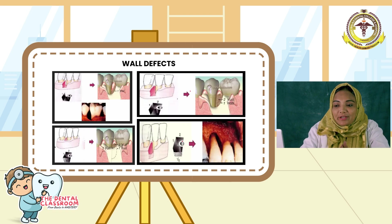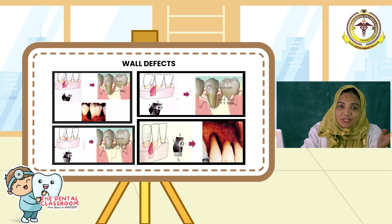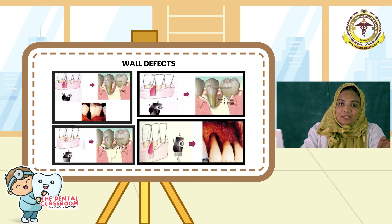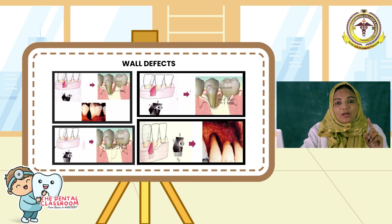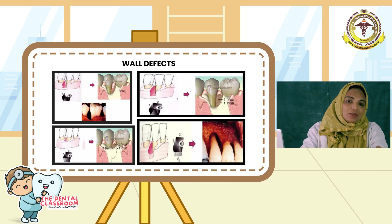Moving on to wall defects. It can be 1-wall defect, 2-wall defect, 3-wall defect, or combined osseous defects. In a 1-wall defect, only 1 wall remains and 3 walls are involved — it could be either buccal, lingual, mesial, or distal. In a 2-wall defect, 2 walls are involved and 2 walls remain — it can be buccal-mesial or lingual-distal. In a 3-wall defect, 3 walls remain and only 1 wall is involved, forming a deep intra-osseous defect. A combined osseous defect is the combination of the above, varying in the number and surfaces involved.